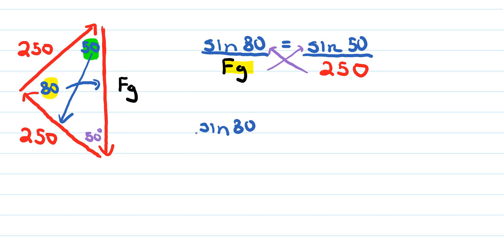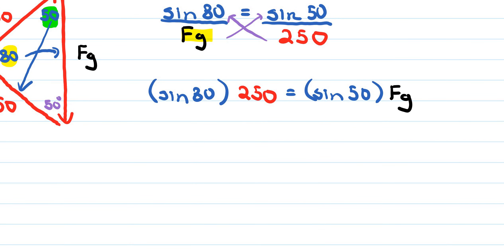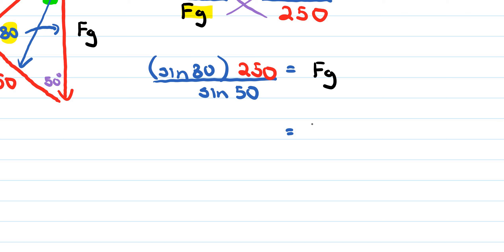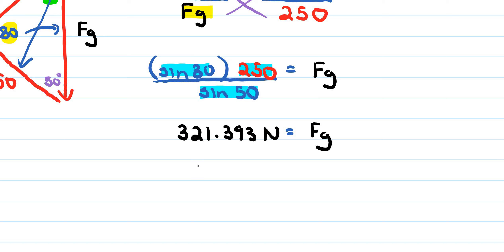Using cross-multiplication: sine of 80 degrees times 250 equals sine of 50 times FG. Dividing both sides by sine of 50 isolates FG. Entering sine 80 times 250 divided by sine 50 into a calculator gives approximately 321.393 newtons. Rounded to two significant figures, 320 newtons is the force of gravity for this problem.